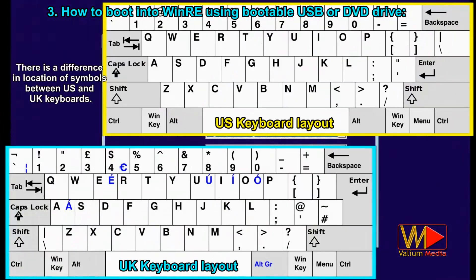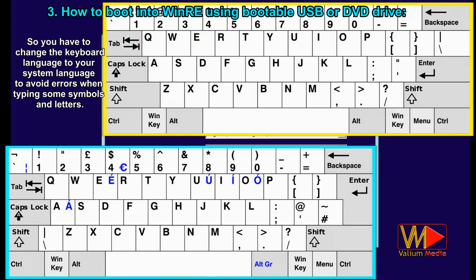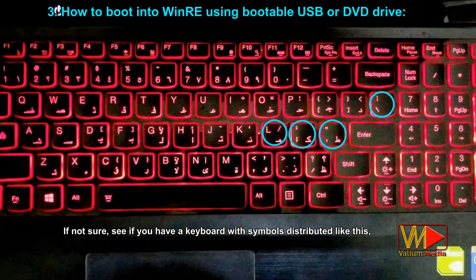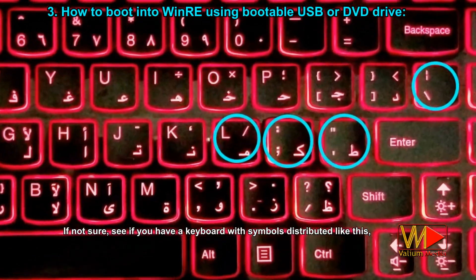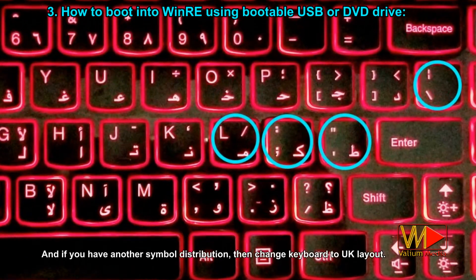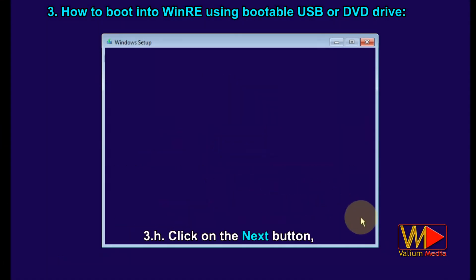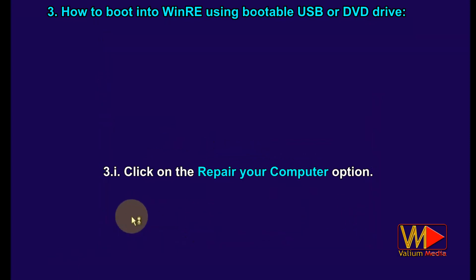There is a difference in key symbol placement between US and UK keyboards, so change the keyboard language to your system language to avoid errors when typing symbols and letters. If you have a keyboard with symbols distributed like the US layout, change keyboard language to US; if you have a different symbol distribution, change it to UK layout. Click the Next button, then click Repair your computer.